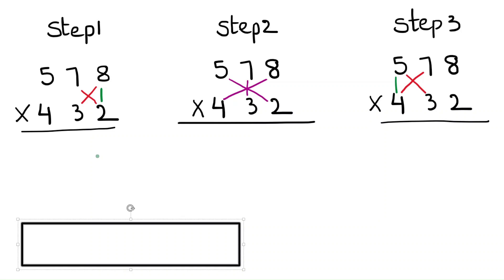Hello friends, in this video we will do three-digit multiplication. I have written in three steps how we are multiplying the numbers. We will find the answer. First, we need to multiply the ones place: 8 times 2 is 16. Cross the last digit and write it in the answer — that is the ones place.